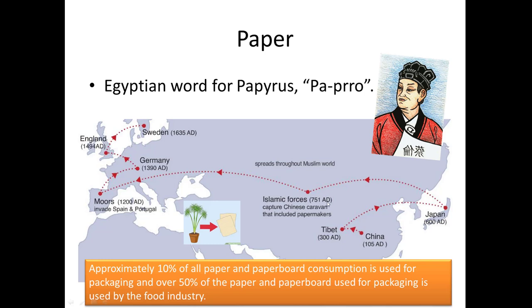From China, paper-making was taken to Tibet, then to Japan. In 751 AD, the Chinese lost a war against the Mughals — the Islamic rulers — and the captured Chinese prisoners who knew how to make paper were taken. In this way the art spread into the Muslim world, then to the Moors, then to Germany and Spain, and eventually to England, Sweden, and the USA.